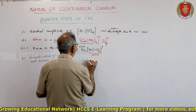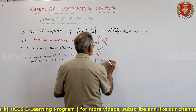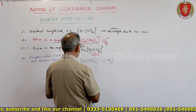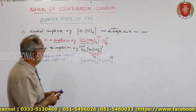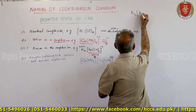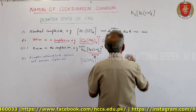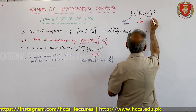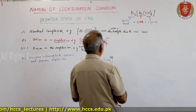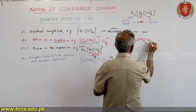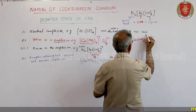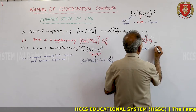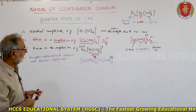A complex can also contain both cationic and anionic complex ions, for example [Co(NH3)6][Cr(C2O4)3]. In general, in K3[Fe(CN)6], Fe is the central metal atom and CN are the ligands. In [Cu(NH3)4]SO4, SO4 is the counter ion with charge minus 2, and the complex ion is plus 2.